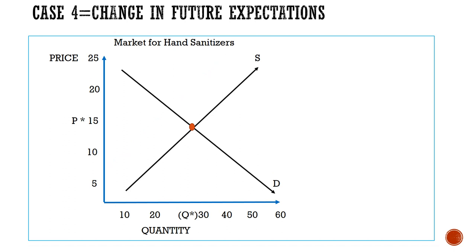A change in future expectations significantly affects your behavior — the amount you prefer to supply today and tomorrow. When you, as a supplier, are aware that prices of a commodity are about to rise in the future, you would choose to supply less today and store more for the time when the price actually rises. And when you're aware that the price of a commodity is about to fall, you would choose to supply more today to generate more revenue.